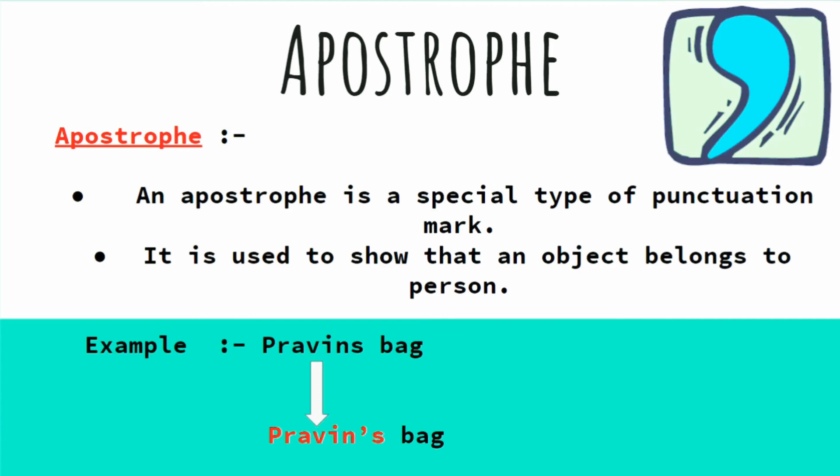Now let us see an example. Praveen's bag. So children, how will we be writing this? Because that bag belongs to Praveen, we will be writing Praveen's bag. What we had done? We had put there apostrophe S.